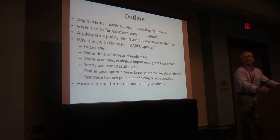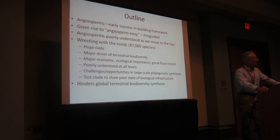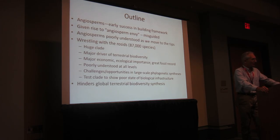That's what we'd hoped to do with the rosids. We thought there were great ecological niche evolution questions we could address with the rosids, because they're such a key clade of angiosperms. But we failed, or are failing, just because of the sheer size of this clade and the lack of available data. The angiosperms reached a framework very early, giving rise — misguided, I think — to a sort of angiosperm envy. The title is Wrestling with the Roses: a huge clade of about 87,000 species.